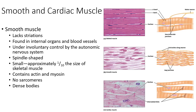Smooth muscle is found in internal organs and blood vessels, lining most of our body cavities such as the GI system — the stomach, esophagus, other hollow organs, and blood vessels. It is under involuntary control, as we discussed when looking at the autonomic nervous system. Unlike skeletal muscle, which we voluntarily control for movement, we cannot control our smooth muscle function.